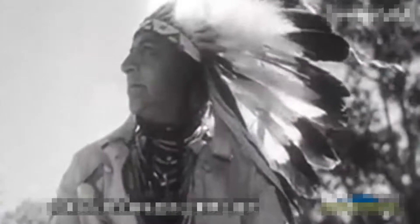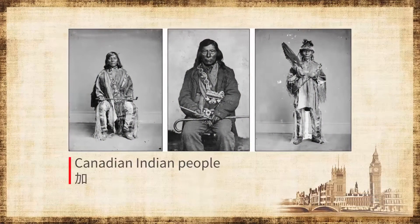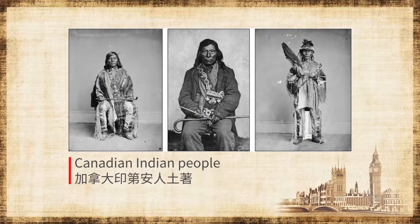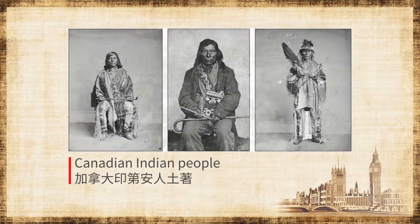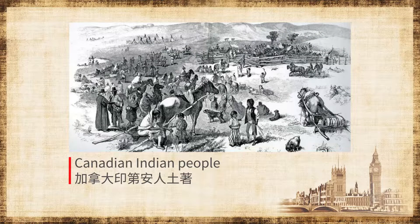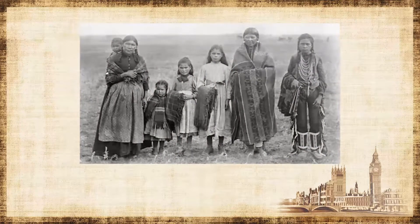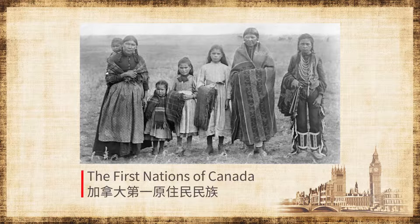Thousands of years before the first European explorer discovered it, this land that would one day become known as Canada was populated by tribes of Aboriginal people. These people used to be called Indians. It is said that when Christopher Columbus discovered America, he thought he had arrived in India and thus accidentally misidentified the native population as being Indian. The native Canadians have been officially referred to as the First Nations.